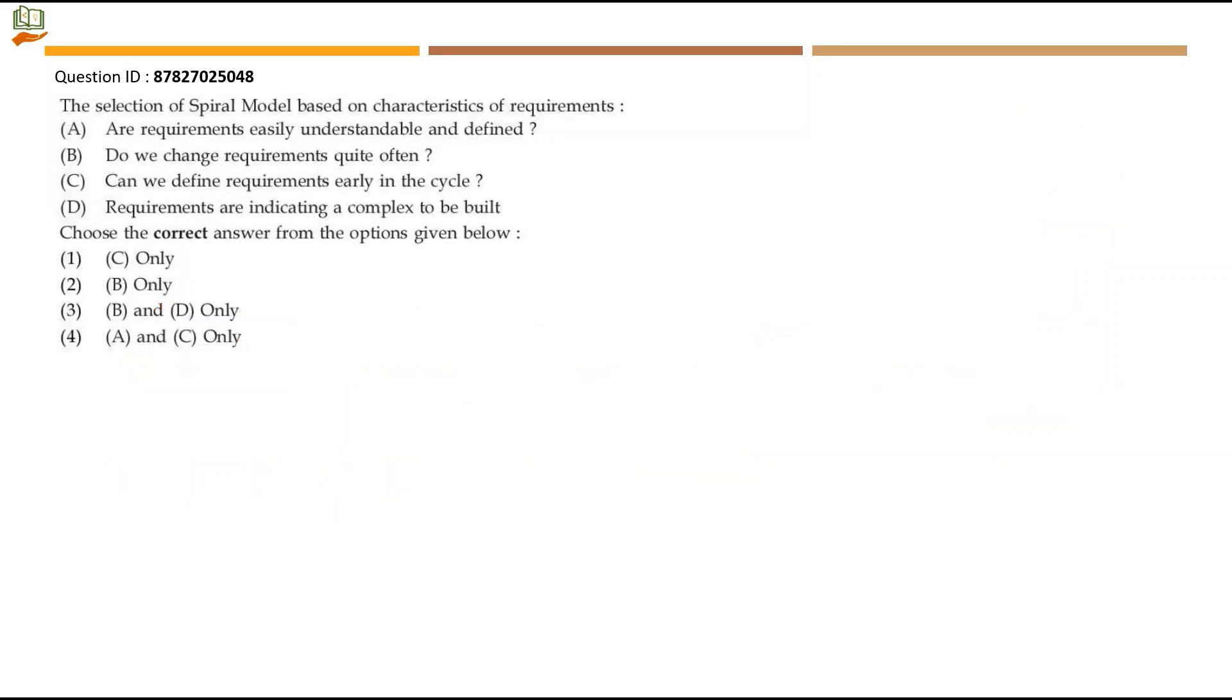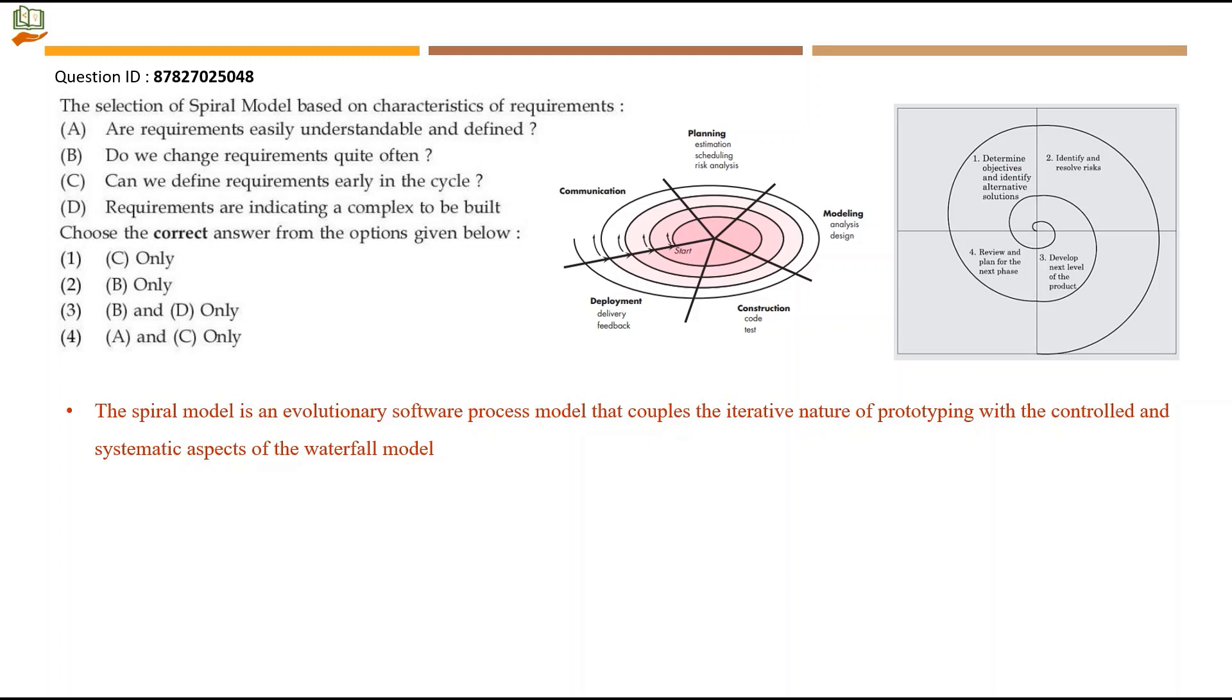Next question: The selection of spiral model based on characteristics of requirements. Let's see about the spiral model. So we start with communication, then go for planning, modeling, construction, and deployment. There is also another spiral model given in the old edition of the same software engineering book written by Roger Pressman.